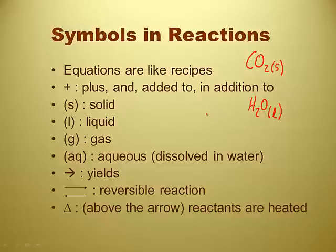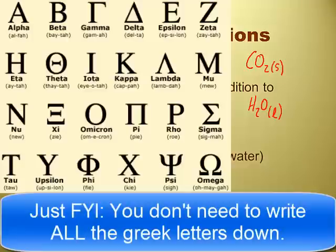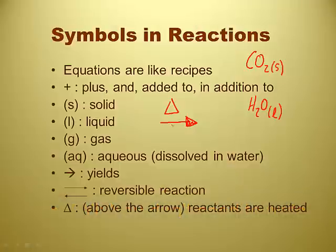And then there's one last symbol that's possible. This triangle, a delta. We write it above the arrow when reactants are heated, when things are being heated up. So if I was doing something where something was burning or something was being heated, I'd write a delta above the arrow. And delta is a Greek symbol. So if you want to go to college and you want to join a fraternity or a sorority, you've got to know the Greek letters. Delta, delta, delta. Can I help you, help you, help you?